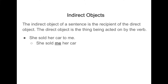The indirect object of a sentence is the recipient of the direct object. So she sold what? She sold her car — that's the direct object. In this first line, she sold her car to me — we have a prepositional phrase: to me. If we move that over in the sentence and drop the to, suddenly we have an indirect object. She sold what? Her car. And who did she sell it to? Me.